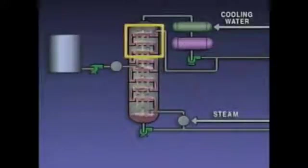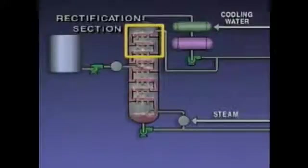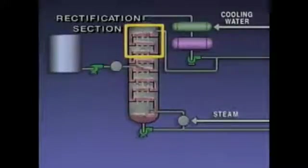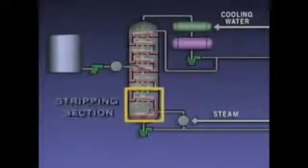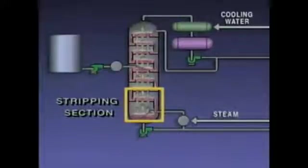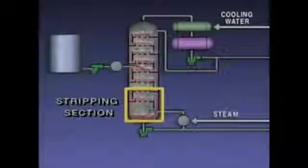The section above the flash zone is called the rectification section. In this part of the tower, the concentration of lighter components increases. The section of the tower below the flash zone is called the stripping section. In this section, the lighter components are vaporized or stripped from the heavier liquid.